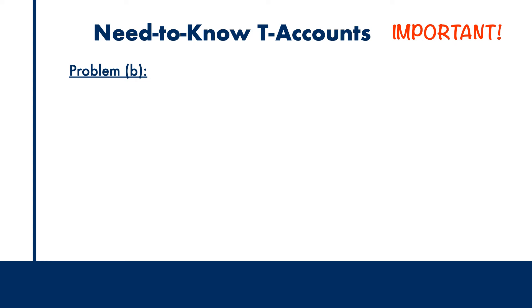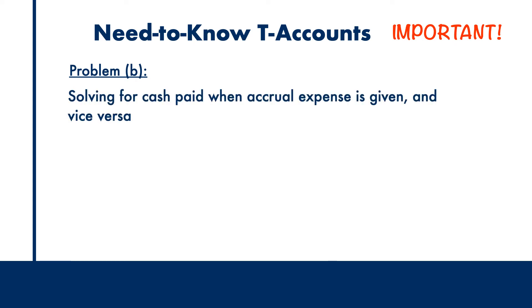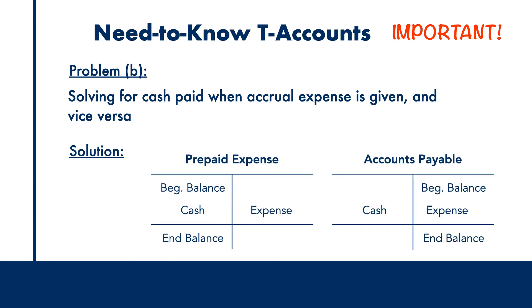Moving on to the second half of the problem: solving for cash paid when accrual expense is given, and vice versa. The solution for expenses is the T-accounts for prepaid expense or the accounts payable T-account. Again, take a minute and note these down. And just like we previously saw, the questions will give you the value of the expense and ask you to solve for cash paid, or the other way around. That is really all there is to it — just plug and chug, folks. It's really that simple.